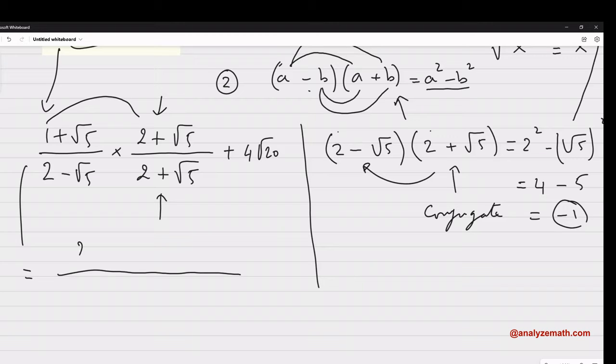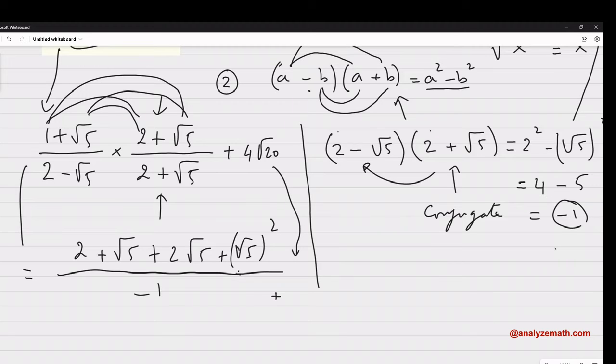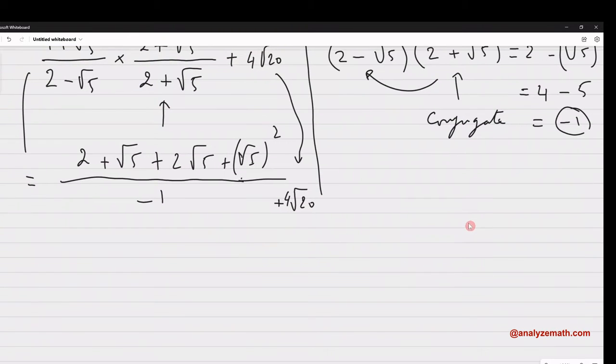1 by 2 will give me 2. 1 by square root of 5, square root of 5, square root of 5 multiplied by 2. And then, square root of 5 multiplied by square root of 5. That's square root of 5 squared, which we know it will simplify to 5. Now, the bottom, it's already done here. When you multiply this by this, it's already done here, and it gives you minus 1. Let's not forget this. Plus 4, square root, plus 4, square root of 20.